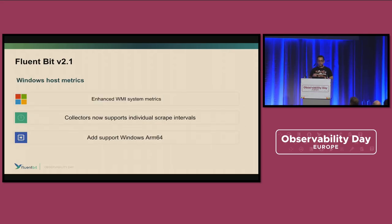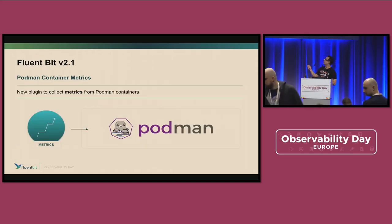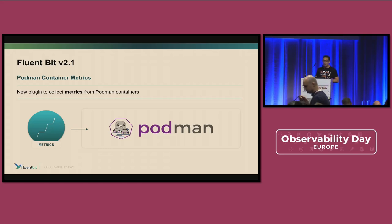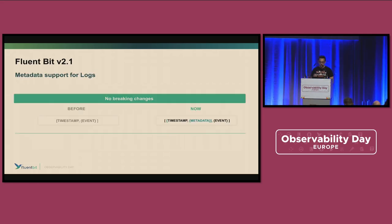For Windows, we enhanced the whole WMI system to collect metrics. Now we also support the capability to scrape at different intervals, and we added support for Windows ARM64 — this is quite new. Additionally, FluentBit is now able to scrape Podman container metrics. Podman is a new way to run containers being pushed by Red Hat, and if you're running Podman, you can scrape all the metrics using FluentBit.